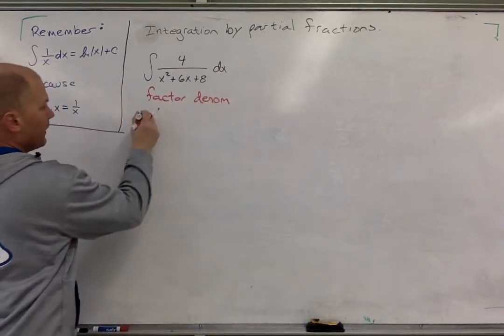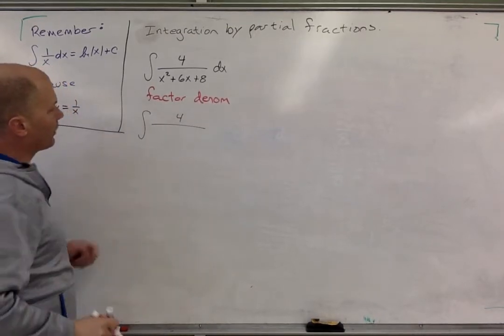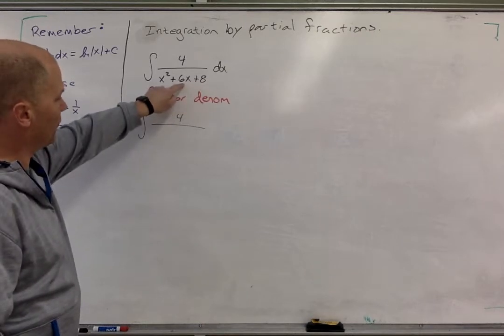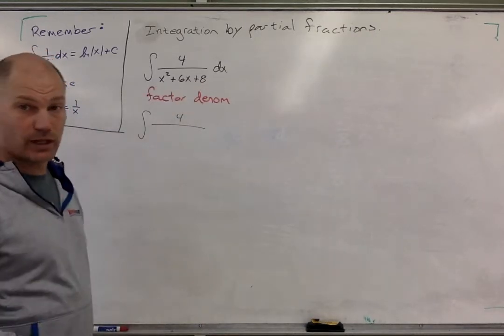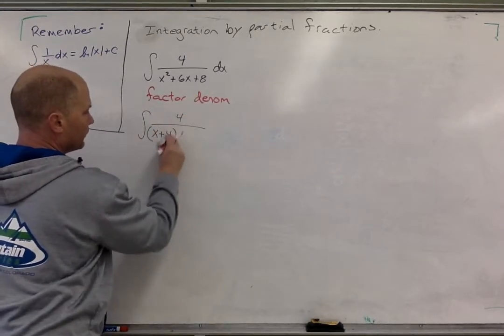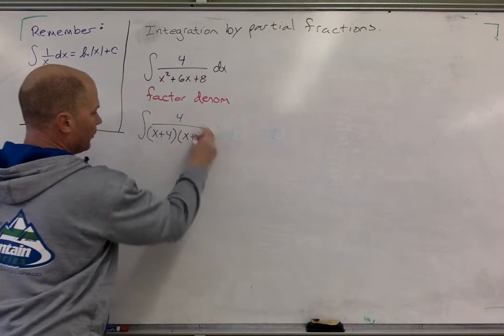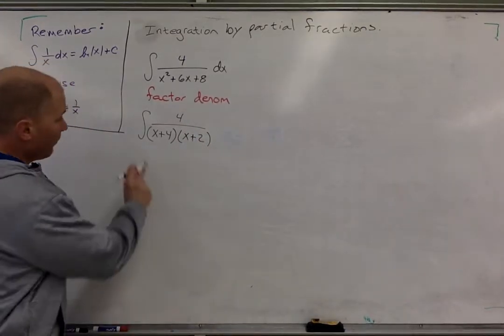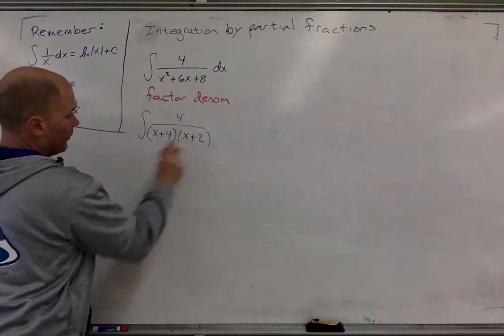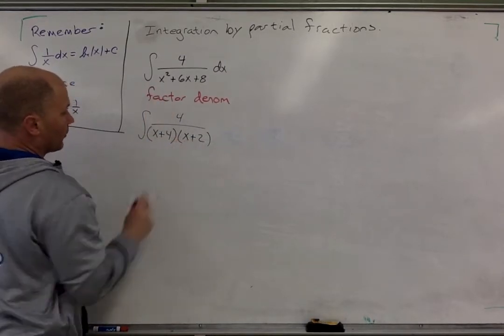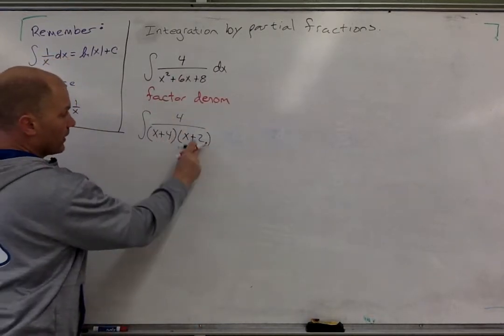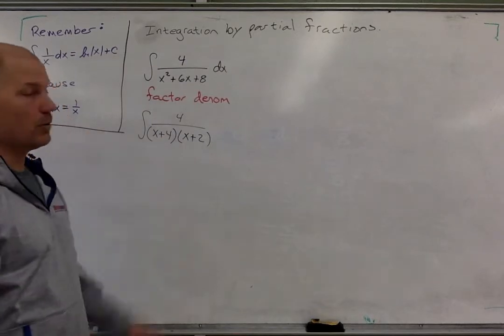And so when we do that, what we are looking for, just a quick reminder, we're looking for two numbers that multiply to 8 and add to 6, and those numbers are 4 and 2. And because it's all plus, we're looking for x plus 4, x plus 2. We can double-check by foiling. We would get x times x is x squared. Good. x times 2 is 2x. x times 4 is 4x. 4x plus 2x is 6x. 4 times 2 is 8. We've got it.